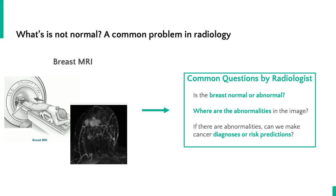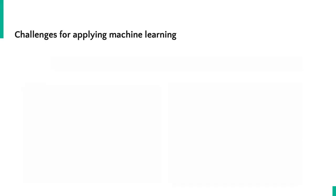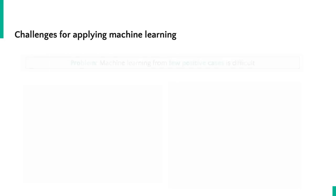MRI scans are complex three-dimensional spatial measurements, and so answering these questions requires a very experienced radiologist and substantial analysis time, particularly in cases that have very subtle abnormalities. This problem can be tackled using machine learning by training a neural network to automatically identify abnormal MRI scans. However, applying machine learning to a problem like this comes with significant challenges.